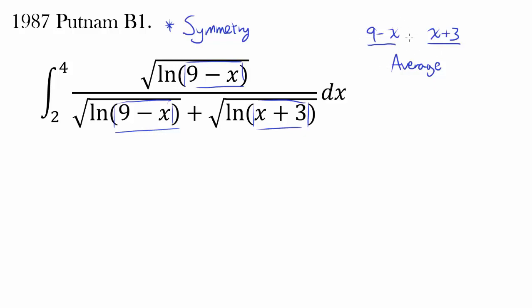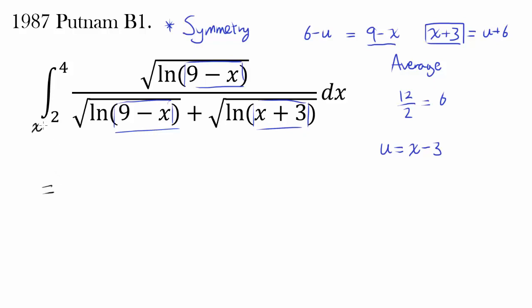The average of (9 minus x) and (x plus 3) is simply 12 over 2, or 6. So the average is 6, and we let u equal x minus 3. By doing so, x plus 3 becomes u plus 6, and 9 minus x becomes 6 minus u. Since x goes from 2 to 4, u goes from negative 1 to 1 — another symmetry with respect to 0. That's fantastic.